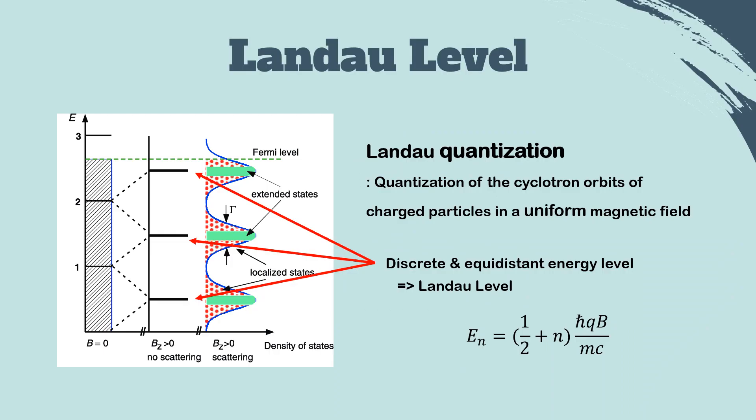First of all, Landau quantization refers to the quantization of cyclotron orbits of charged particles in a uniform magnetic field. Then the charged particles occupy orbits with discrete and equally spaced energy levels. And we call this equidistant energy level the Landau level. The mathematical form of the Landau level is 1/2 plus n multiple ℏ omega, where omega equals QB over mc.